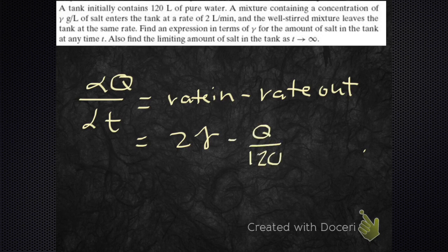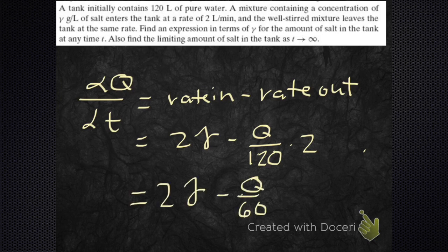Then the rate out - what is it? The amount of salt divided by 120, that's the concentration in the tank at any time, and then it flows out at a rate of 2. So we're going to clean up our dQ/dt, and when we do, we get Q over 60.